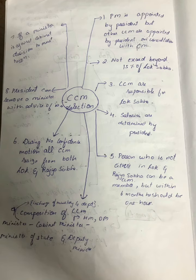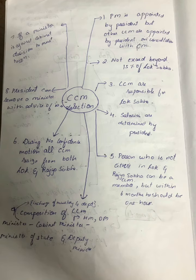The fifth important point is that a person who is not in either Lok Sabha or Rajya Sabha can be a minister, but within six months he or she should be in one of the houses. For example, our finance minister Nirmala Sitaraman — she was selected by the party, not through election. At that point she was not in Lok Sabha or Rajya Sabha, so she had a six-month time duration to choose to be in one of the houses of parliament.